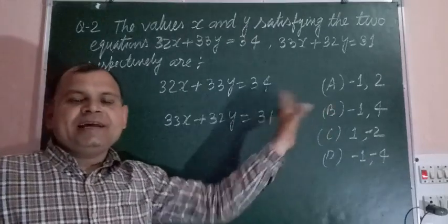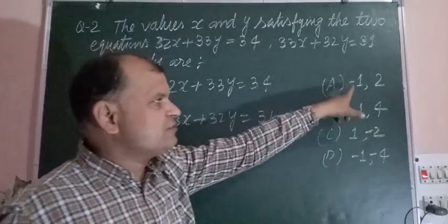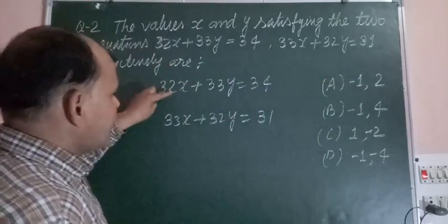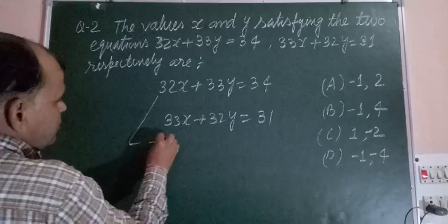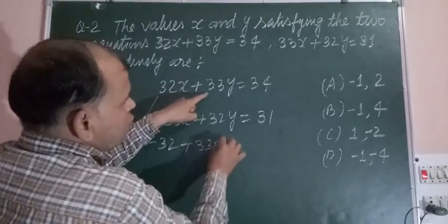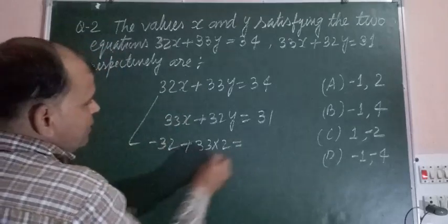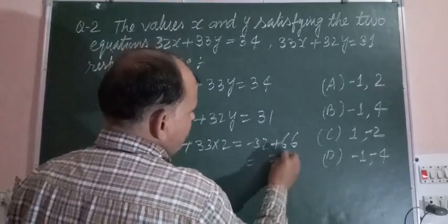Now we check which value satisfies this equation. So we take first value minus 1. When we put minus 1 here, this becomes minus 32. And 33 into 2, this becomes minus 32 plus 66. So we got here 34.